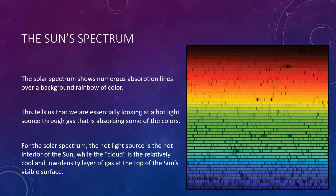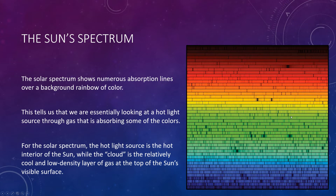Returning to the sun's spectrum, we can apply these ideas to the solar spectrum, which shows numerous absorption lines over a background of rainbow color. This tells us we are essentially looking at a hot light source through gas that is absorbing some of the colors. For the solar spectrum, the hot light source is the hot interior of the sun, while the cloud of gas is the relatively cool and low-density layers at the top of the sun's visible surface, which we call the photosphere. So already we know that much about the sun just from studying its light.